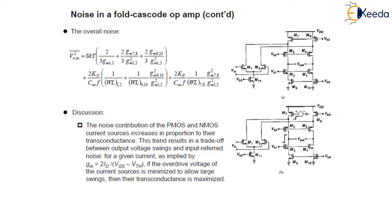Now we can see the noise contribution of the PMOS and NMOS current sources increases in proportion to their transconductance. This trend results in a trade-off between output voltage swing and input-referred noise.